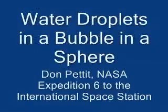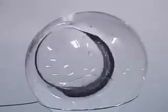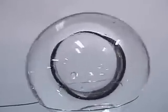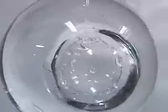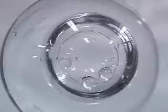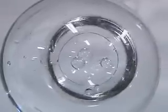Water droplets in a bubble in a sphere. Here we have a sphere of water 75 millimeters in diameter with an air bubble inside about 35 millimeters in diameter, and we inject water droplets anywhere from one to eight millimeters in diameter into the bubble and look at the resulting collision dynamics.